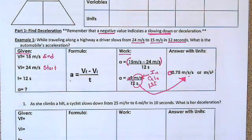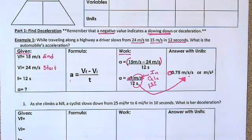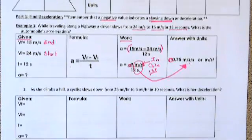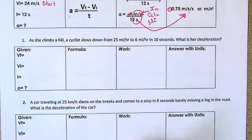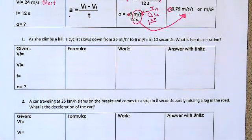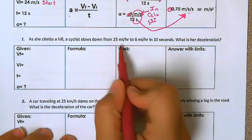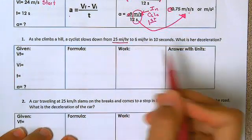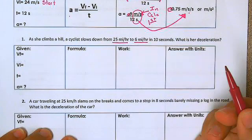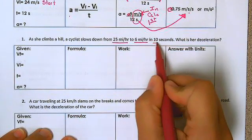So let's look at another example of a deceleration problem. Let's do number one together. This one says as she climbs a hill a cyclist slows down from 25 miles an hour to six miles an hour in 10 seconds.